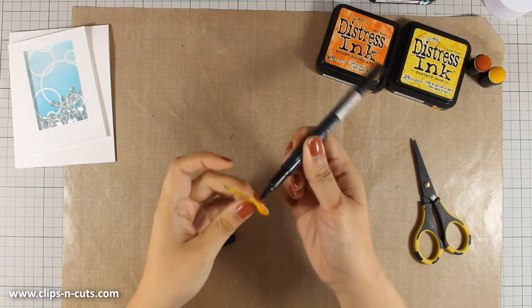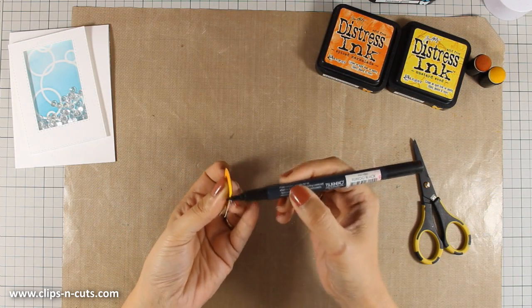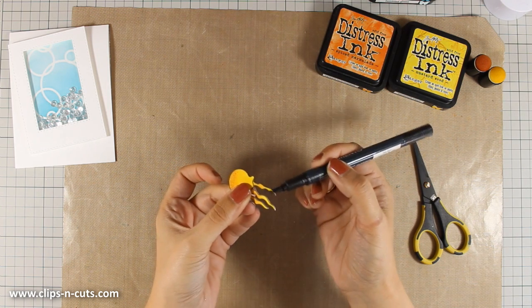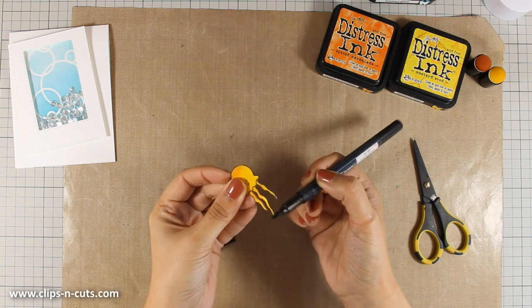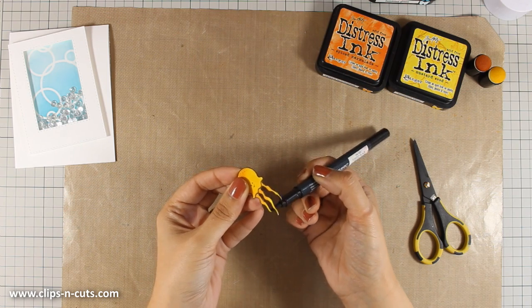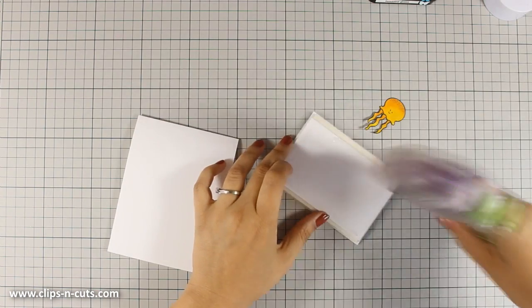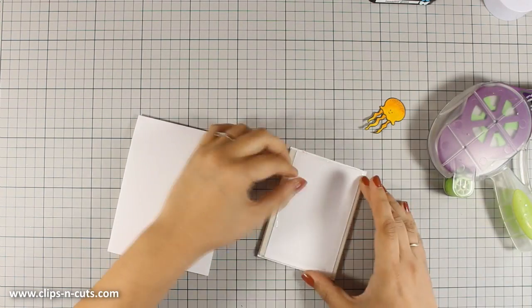I am using my black marker to go around the edges to get rid of the white edge and this will make the cutout look more finished as well as it will look as if I have cut out the image perfectly.